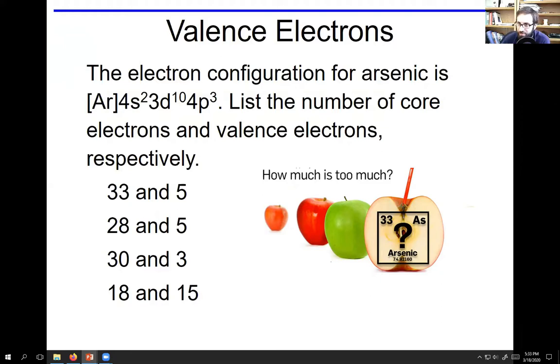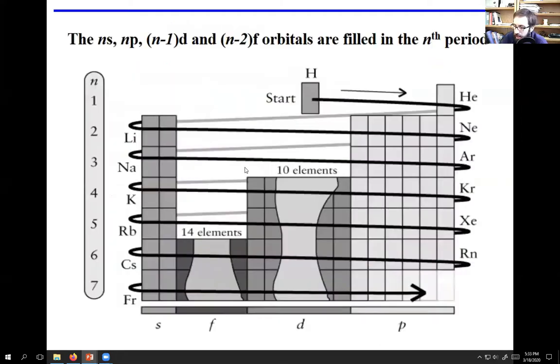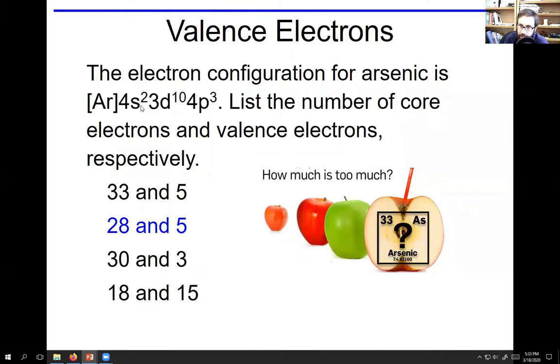We're not going to go over the 18 electron rule in this course much, but it all comes from quantum mechanics. Take inorganic chemistry from me and you can learn about all this stuff. Okay, arsenic - arsenic is in apple seeds. Eat a bunch of apple seeds, maybe that's bad for you. Arsenic is poisonous. Electron configuration is given to you for arsenic, the abbreviated one bracket argon. List the number of core electrons and valence electrons respectively.